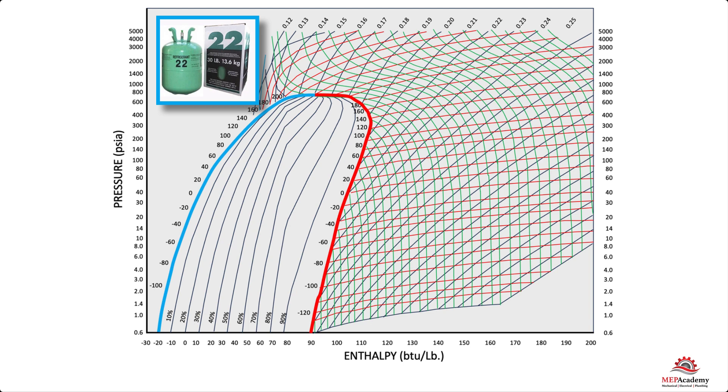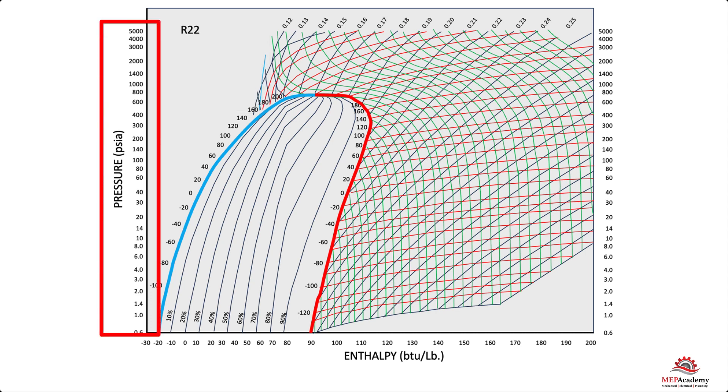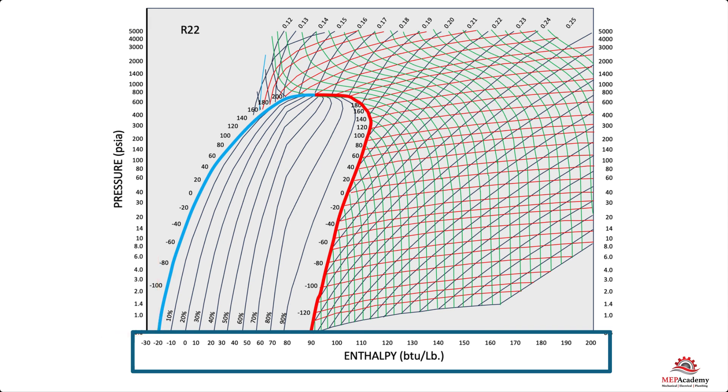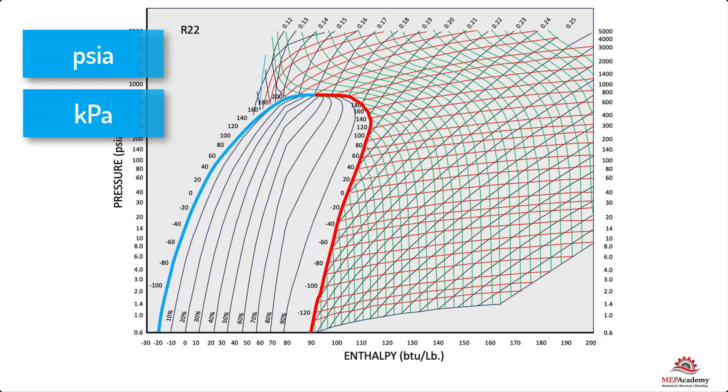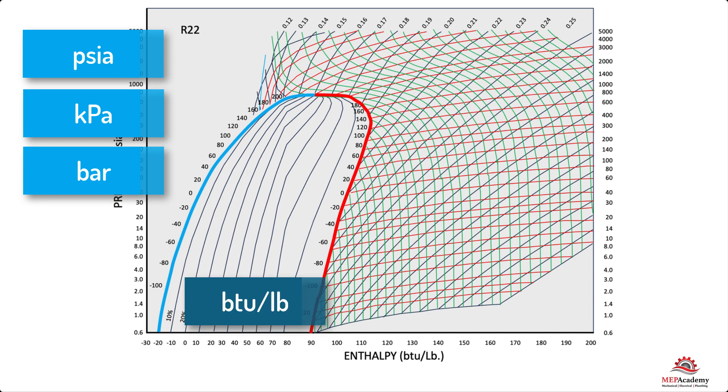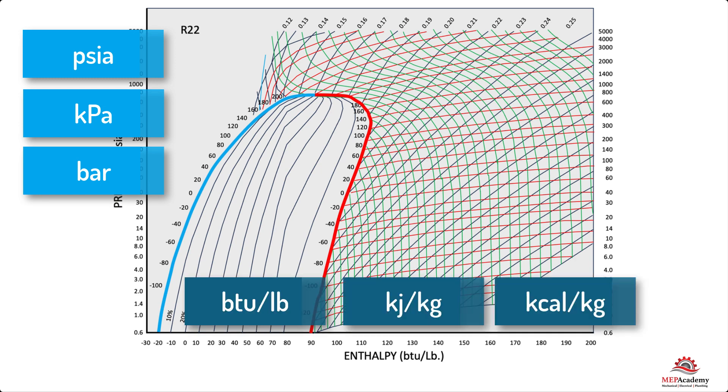Understand the axis. The pressure enthalpy chart typically has the pressure on the y-axis and the enthalpy on the x-axis. The pressure is usually measured in units like psi, kilopascal, or bar, while the enthalpy is measured in units like BTU per pound, kilojoule per kilogram, or kilocalorie per kilogram.